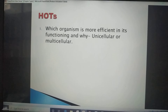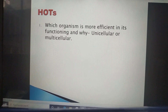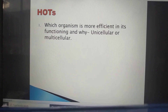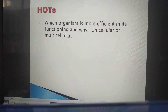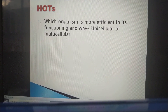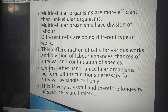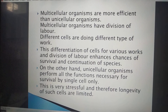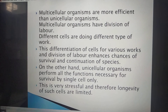Now for classwork: which organism is more efficient — unicellular or multicellular — and why? Organs, and organisms, are divided into two categories — unicellular or multicellular — based on the number of cells in their body. Multicellular organisms are more efficient than unicellular organisms.